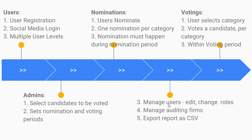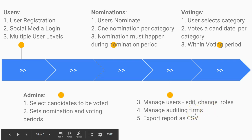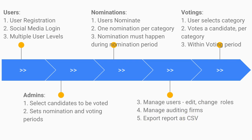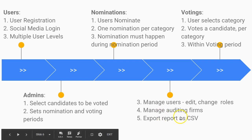Admin sets the nomination and voting periods and also manages users. If admin wants to add moderators to help manage the platform, they can access all user profiles and change user roles — enabling someone to become a moderator. Admin can also edit user details. Additionally, admin can manage auditing firms or bodies — third parties brought in to monitor the process.